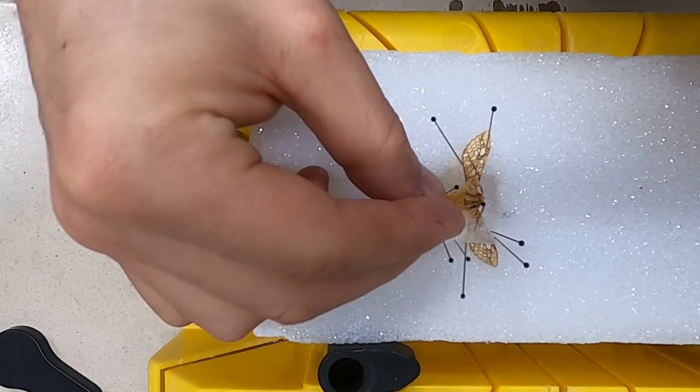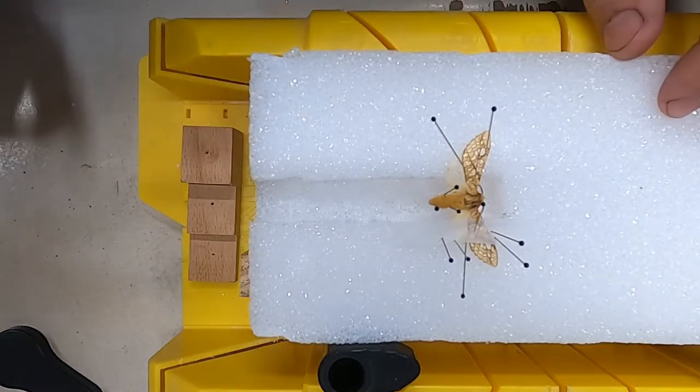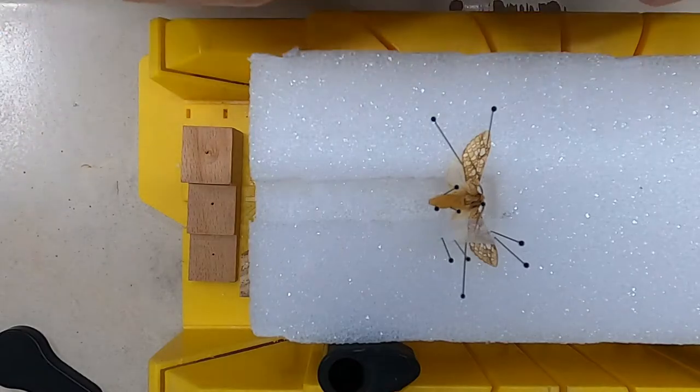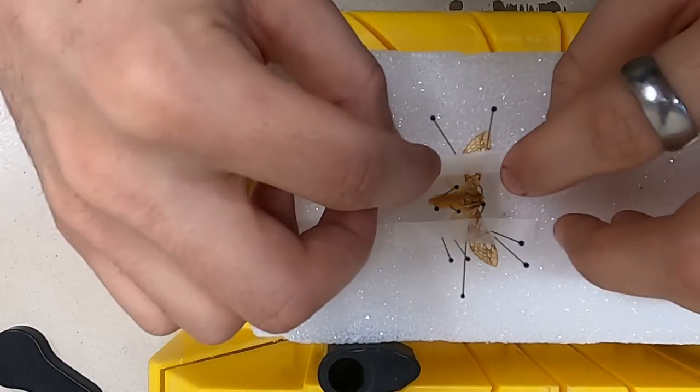I like the wax paper because it's a little bit see-through and you can see if the wings are moving while you're in the process of pinning the paper down, and you can make adjustments before it dries.